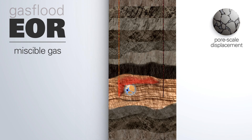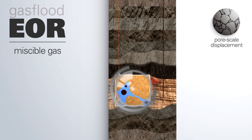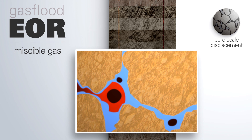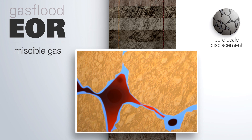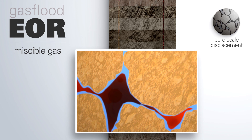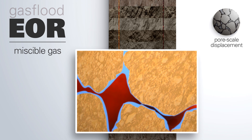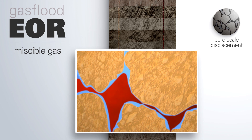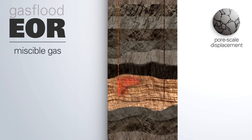When miscible gas comes in contact with the oil, it exchanges components at the interface between the two, so the gas gets heavier and looks more like oil, and the oil gets lighter and looks more like the gas, until finally the interface disappears.